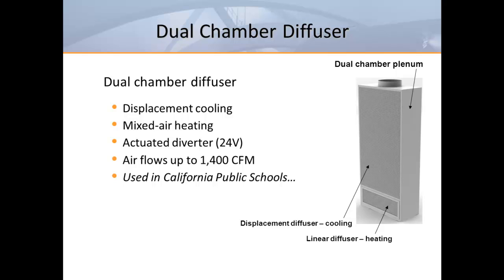The dual-chamber displacement diffuser was originally developed by Titus for a school district in Southern California — they wanted the advantages of displacement ventilation for their classrooms but didn't want a separate system for their mild heating requirements. This diffuser is built with a rear plenum that can supply air through either a large displacement panel for cooling or redirect the air through a lower grill section for heating. The reduced size of the lower grill increases the discharge velocity to get the horizontal projection needed for heating. The internal diverting damper can be activated by a small electric actuator, and a self-powered energy harvesting model is also being developed that will be completely standalone, requiring no power or external control signal.